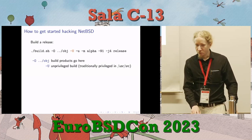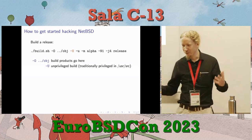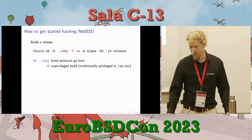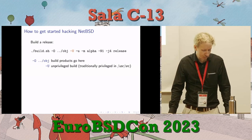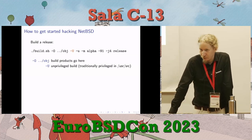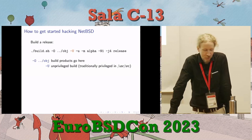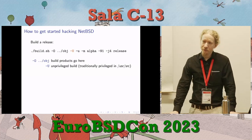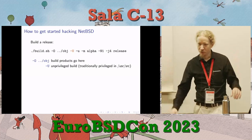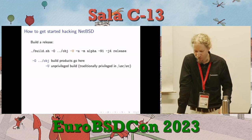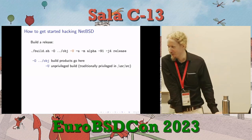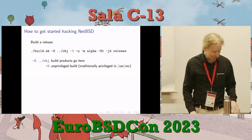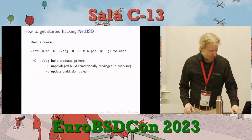-U makes it an unprivileged build. Traditionally from the 80s, you'd build as root in /usr/src with build products in /usr/obj, but these days it's built unprivileged and you don't have to worry about running GCC or Clang as root. -u makes it an update build, so if you make a mistake in some code you're editing, it'll pick up where it left off — you don't have to recompile everything if you just change one .c file.